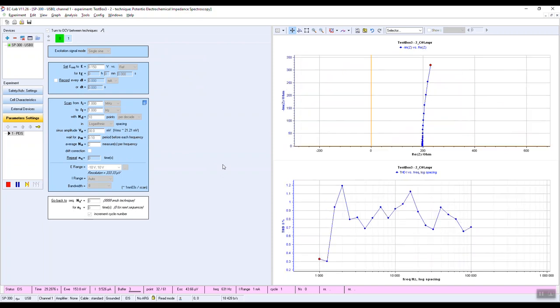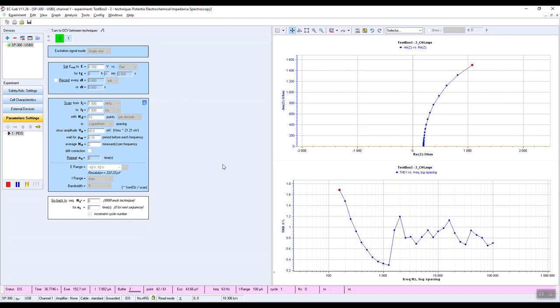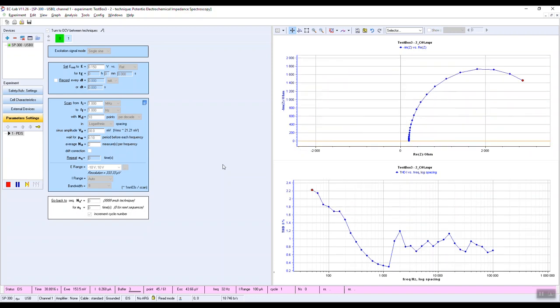As the measurement is conducted in voltage control, we are concerned by the harmonics of the current response. That's why we look at the THD of the current.